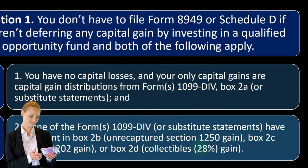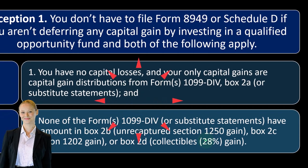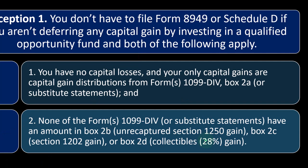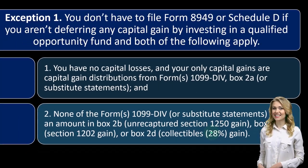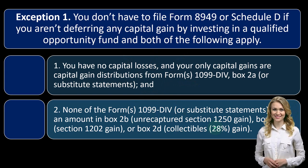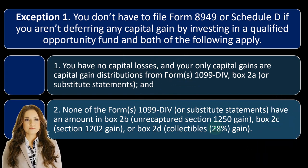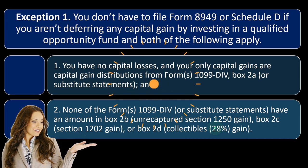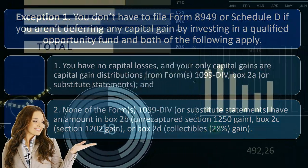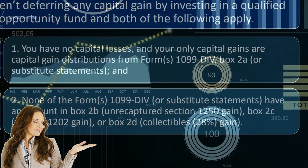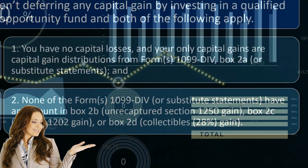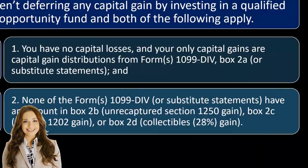You want to be able to explain the difference to a client: dividends have ordinary versus qualified treatment (qualified dividends may get favorable tax treatment); distributions classified as capital gains mean the company distributed above and beyond retained earnings; and when you actually sell stock, that generates a 1099-B with the sales price, which is when the person physically sold the stock.